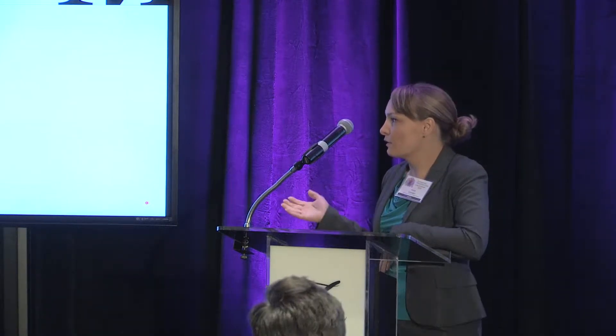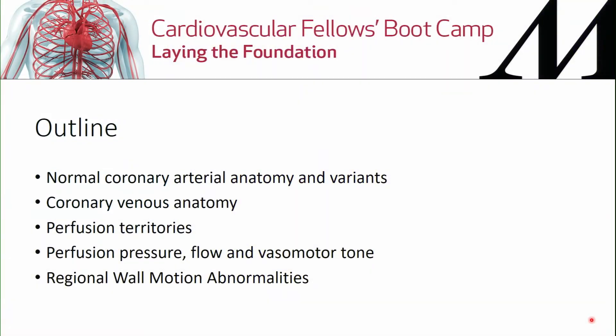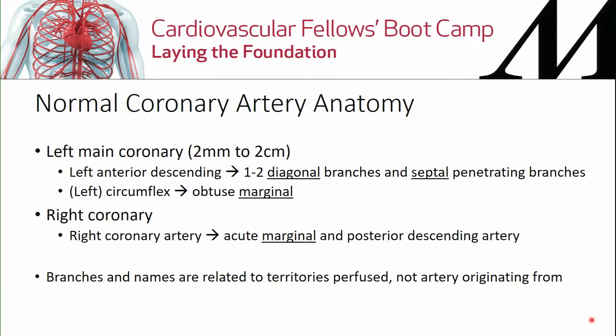I'm speaking from an anesthesiologist's perspective, and we'll conclude with some transesophageal echos that will give you a chance to look at where you think a regional wall motion abnormality might be. Here's the outline: the first couple of points are going to be more medical school review — coronary artery anatomy and variants — and then we'll get into the regional wall motion abnormalities.